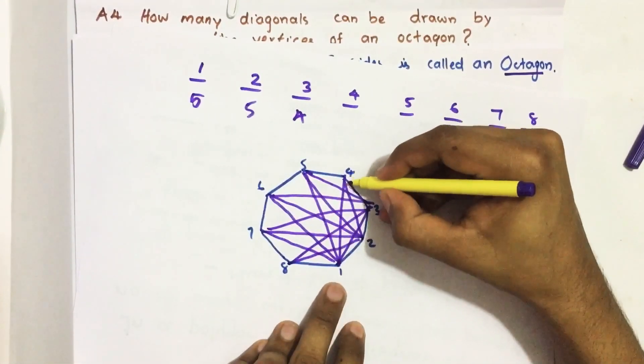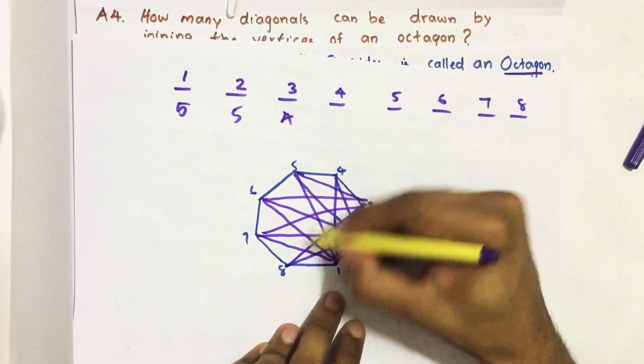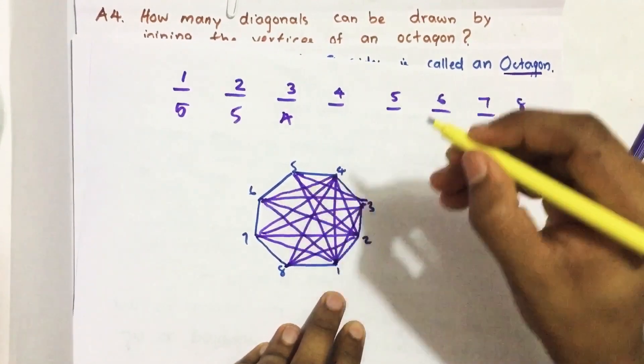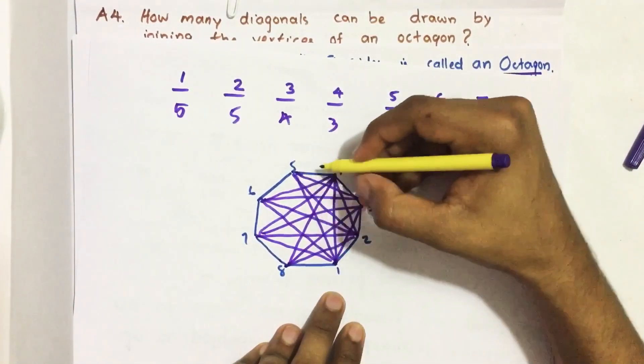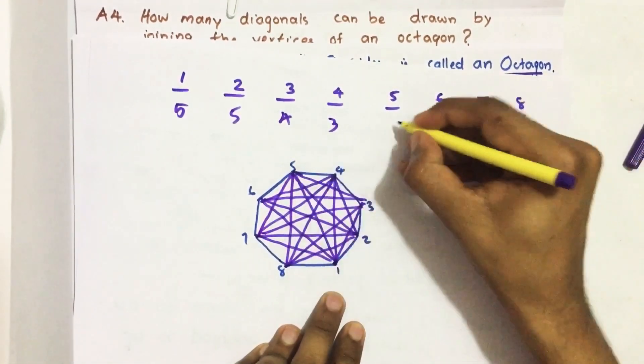Here from vertex 4, already 2 diagonals are drawn—4 to 2 and 4 to 1. Then 1, 2, 3—three are possible. Here already 3 are drawn, remaining 2 I have drawn.